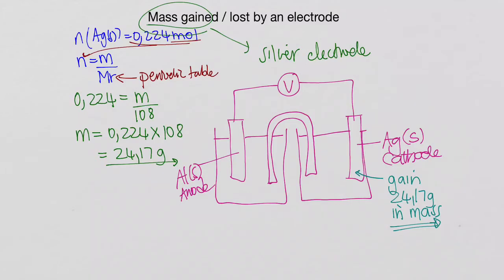We know that the anode is a loss. So can we work out the loss in mass, the loss of mass of the aluminum electrode on the left-hand side?